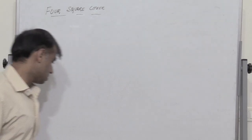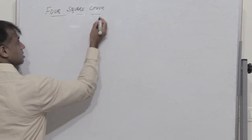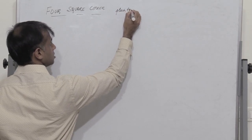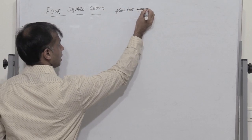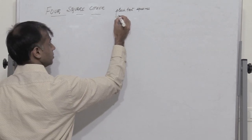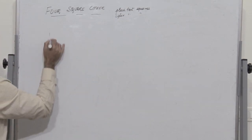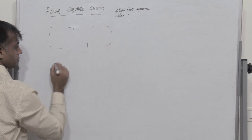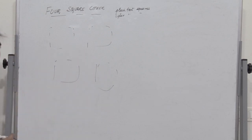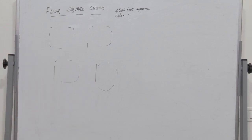Two squares are known as plain text squares. There are two other squares which are known as ciphertext squares. The top-left and the bottom-right are plain text squares, whereas the upper-right and the bottom-left are the ciphertext squares.